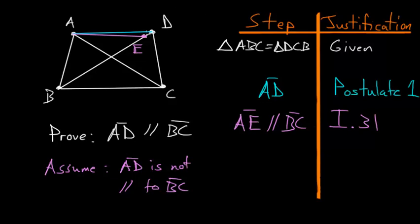And then let's also connect the points E and C here, which we can do because of postulate number one. And now notice that we have two triangles ABC and ECB, which share the same base and end at the same line, which is parallel to the line BC.